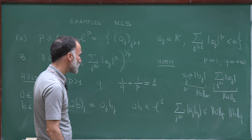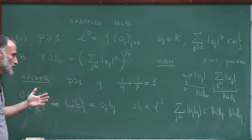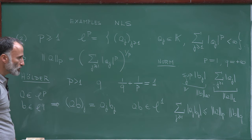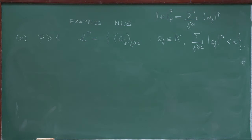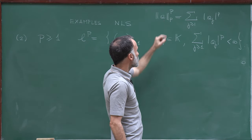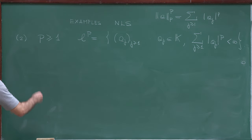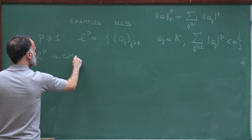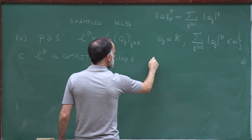At this point we have a linear space which is normed with the Lp norm. Now I claim that this space Lp is complete. Again, we prove this in two steps: step one, find a candidate; step two, prove convergence. Let's consider a sequence xn which is Cauchy. Remember xn is a sequence, so it's xn₁, xn₂, and so on.